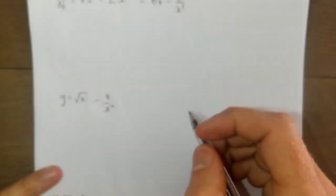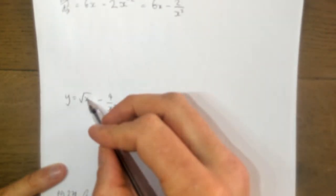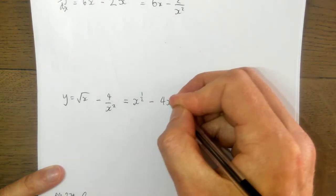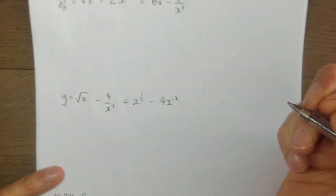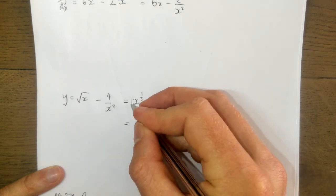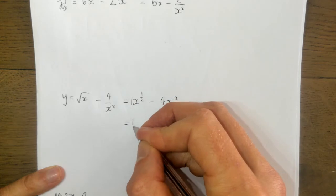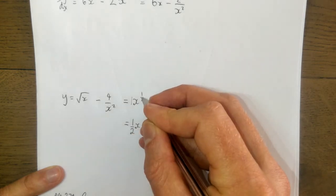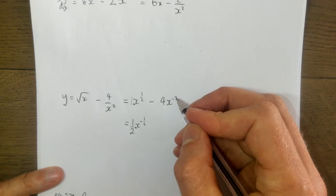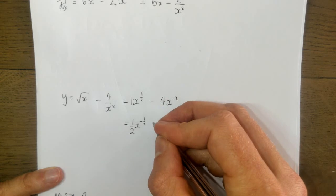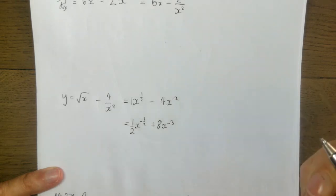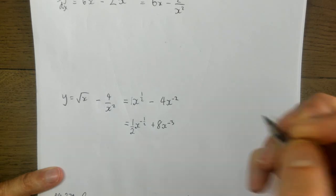Another example: rewrite the square root of x as x to the power of a half, and 4 over x squared as minus 4 times x to the minus 2. Applying the shortcut method: bring the half down - half times 1 is a half - x to the power of half minus 1, which is minus a half. For the minus 4x to the minus 2 term: bring minus 2 down, multiply by minus 4, giving positive 8; minus 2 take 1 away gives minus 3. So dy/dx is a half x to the minus a half plus 8x to the minus 3, or equivalently 1 over 2 root x plus 8 over x cubed.